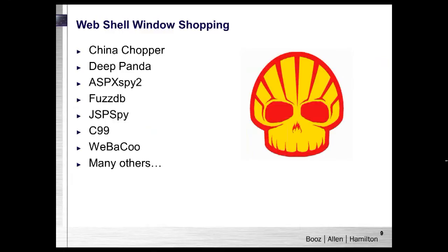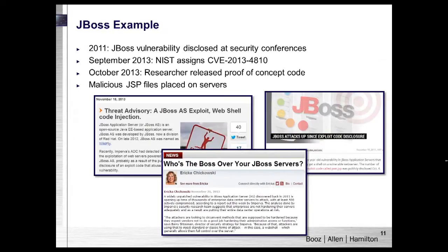These are some web shells you may have heard of in recent years. China Chopper and Deep Panda got quite a bit of press during the past year, and C99 is a PHP shell that's been used for well over a decade — so they've been around quite a while.